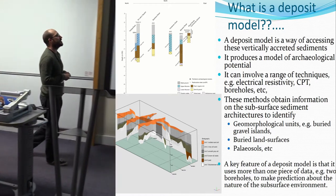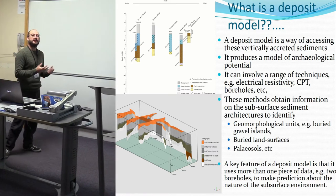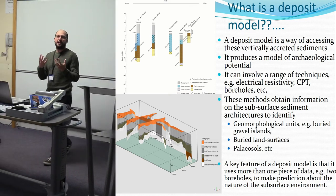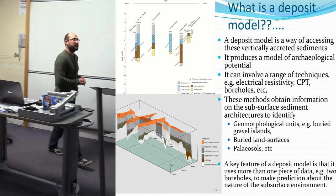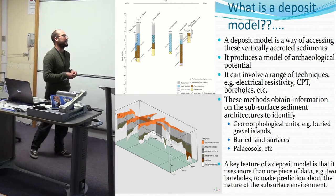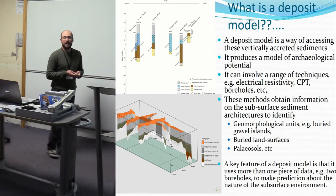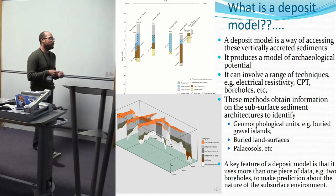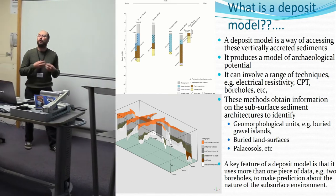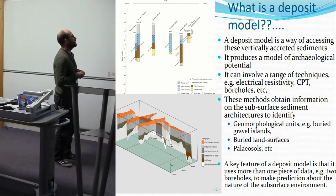So if we accept this generic distinction between the two types of environments, why is the deposit model necessary? If we have deep vertically accreted sediments we can't access the archaeology directly - you can't take a GPR survey across five meters of alluvial sediments and expect to find a house. What we have to do is access the sediments and use these as a proxy of archaeological potential, using a whole range of techniques: electrical resistivity, cone penetration tests, or boreholes.